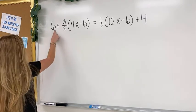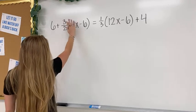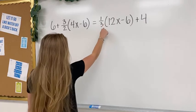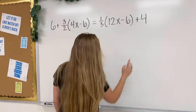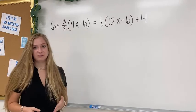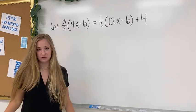We have 6 plus 3 halves times 4x minus 6 equals 1 third times 12x minus 6 plus 4. Right away, I see that neither side is simplified. You need to simplify both sides before you do any solving steps.